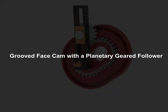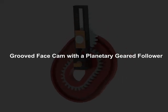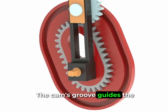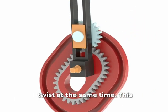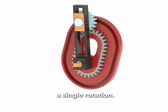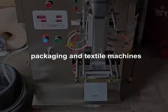Next is the grooved face cam with a planetary geared follower. The cam's groove guides the follower up and down, while gears make it twist at the same time. This creates complex motion from a single rotation. It's used in packaging and textile machines.